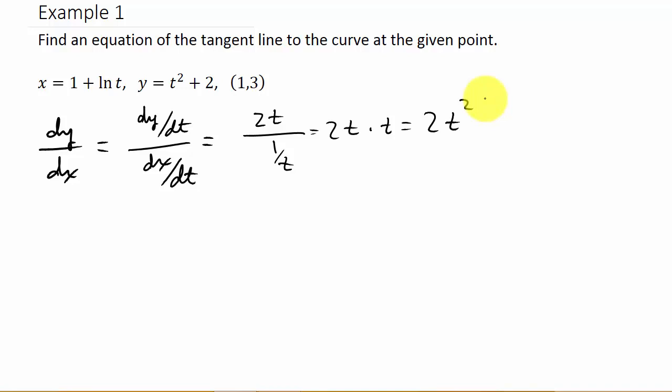Alright, so now the slope of the tangent line is the derivative evaluated at t. But what is t? Well, we have to figure out what t is. So we have x is equal to 1 plus the natural log of t.